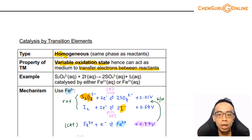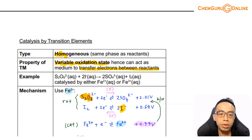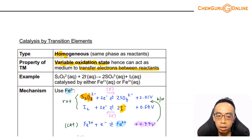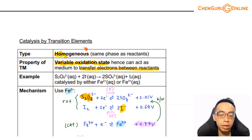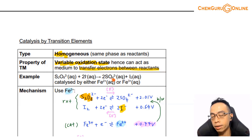For a homogeneous catalyst, if it is in the same physical state, usually the reaction is aqueous and the transition metal is also aqueous. The property that allows the transition metal to function as a homogeneous catalyst is its variable oxidation state. Because they can have a variable oxidation state, they can act as a middleman to transfer electrons. When we draw the mechanism, we will get to appreciate that.